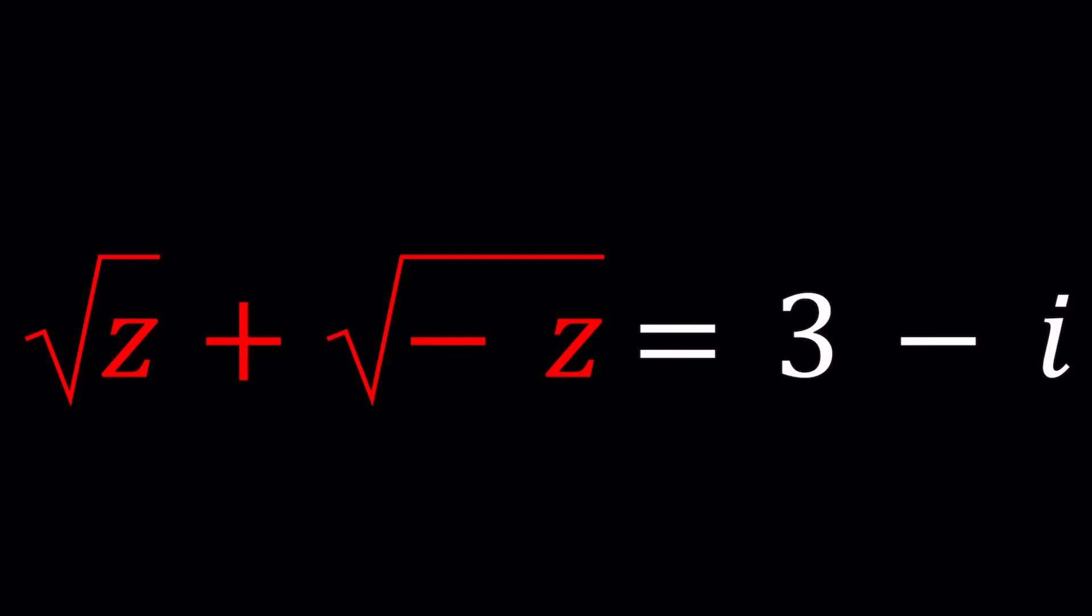Hello everyone. Welcome to A plus B I. This channel is all about complex numbers and in this video we're going to be solving a very, very radical equation with complex numbers. We have square root of z plus the square root of negative z equals 3 minus i and we're going to be solving for z values.